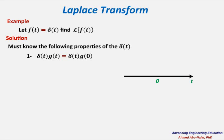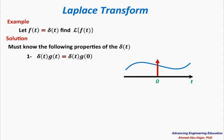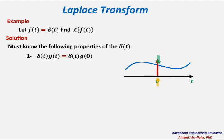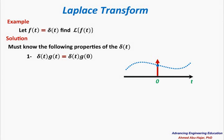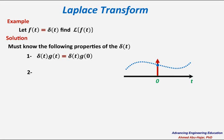Let me show that graphically. If we plot g of t and plot the delta function — which is a spike at zero — then when you do the multiplication, you multiply by zero everywhere except at t equals zero, where g at zero is multiplied by the delta function. The second property: when you integrate the delta function and the integral limits include the delta function, the area under the curve equals one — so the integral of delta of t dt equals one. The third property: e to the zero equals one.